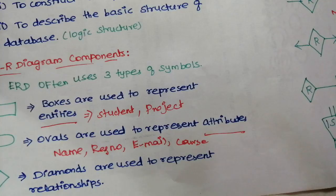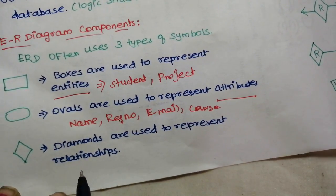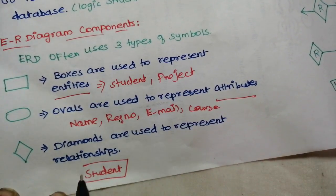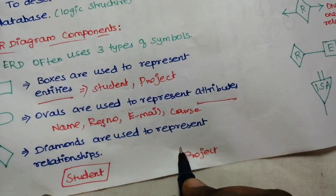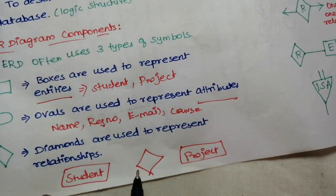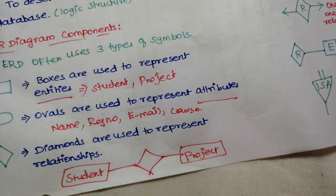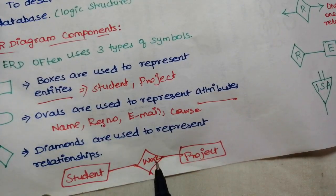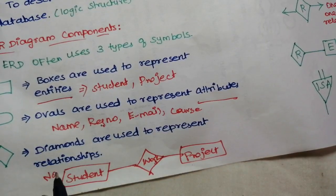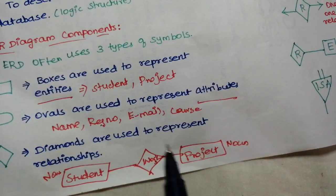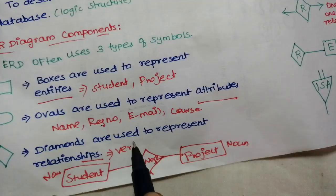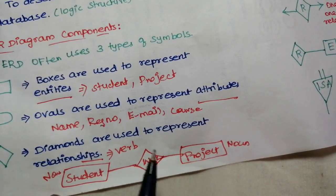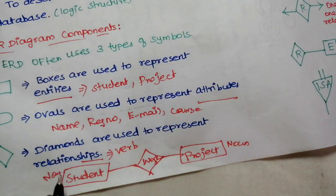Diamonds represent relationships. For example, this is a student entity and this is a project entity. What is the relationship? Student works on project. Student is a noun, project is a noun — because entities are nouns. The relationship is expressed in verb form. Student works on project — nouns connected by a verb. Action words like reading, studying, working describe relationships. These are the three basic components.